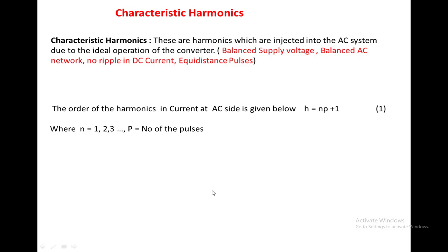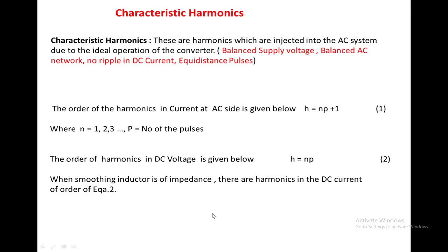The order of harmonics present in AC current is given by H = NP ± 1, where N = 1, 2, 3, 4, ... and P is the number of pulses in the output voltage. H is the order of the harmonic. Similarly, harmonics in DC voltage are of order H = NP, where N = 1, 2, 3, ... and P is the number of pulses. If a smoothing inductor is used on the DC side, harmonics in DC current are also represented by this same order.